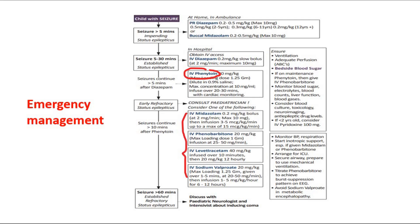While all of this is going on, first we should check the airway, breathing, and circulation — ensuring adequate ventilation and adequate ABCs. Check the bedside blood sugar to rule out hypoglycemia as the cause of the seizure, and if the patient is on maintenance Phenytoin then give IV Phenobarbitone.